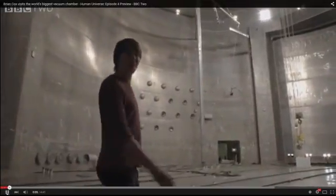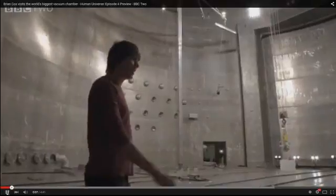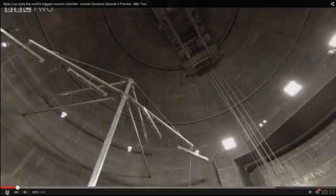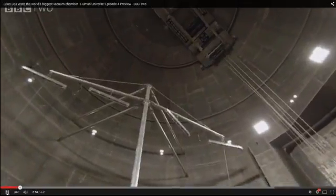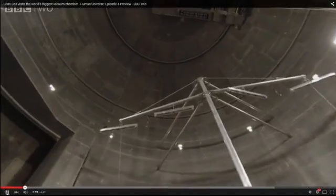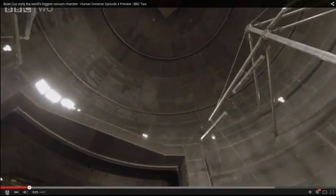This is NASA's Space Power Facility near Cleveland, Ohio, and it is the world's biggest vacuum chamber. It's used to test spacecraft in the conditions of outer space. And it does that by pumping out the 30 tons of air in this chamber until there are about two grams left.